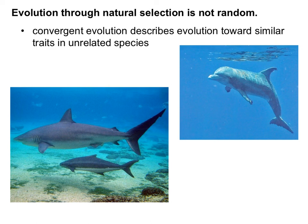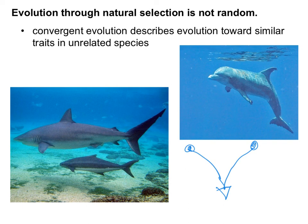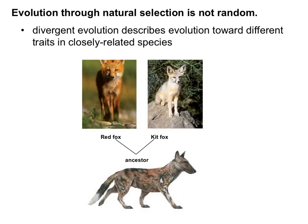Two more terms and then we're done. The first is convergent evolution — to converge means to come together. Convergent evolution is when two distantly related species become similar because they have similar characteristics. A great example is a shark and a dolphin. Sharks are related to fish, dolphins are mammals — they are not related to each other — but they do have similarities: dorsal fins, flippers, and tails. The reason they have these similarities is because they live in the same environment, not because they are related.